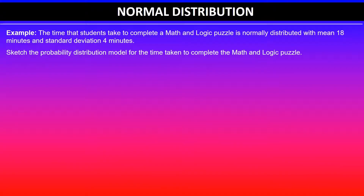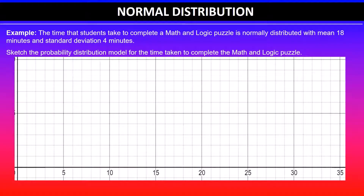In this example, it says the time that students take to complete a math and logic puzzle is normally distributed with a mean of 18 minutes and a standard deviation of 4 minutes. The question asks us to sketch the probability distribution model for the time taken to complete the math and logic puzzle. We'll label the x-axis as time in minutes.